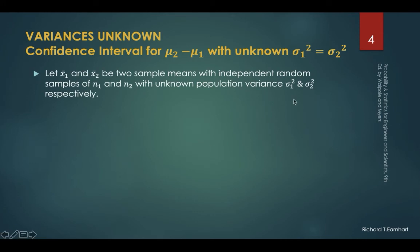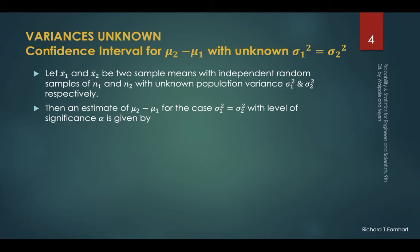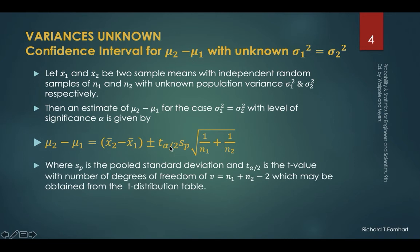For unknown variances sigma 1 and sigma 2, but assuming that the population variances are equal, an estimate for the difference between the population means mu sub 2 and mu sub 1 is given by this formula. We use the t value from the t distribution table with degrees of freedom n1 plus n2 minus 2 and alpha over 2 from the given degree of confidence. The sp in the formula is the pooled standard deviation, obtained by the formula: (n1 minus 1) times S1 squared plus (n2 minus 1) times S2 squared, divided by n1 plus n2 minus 2.